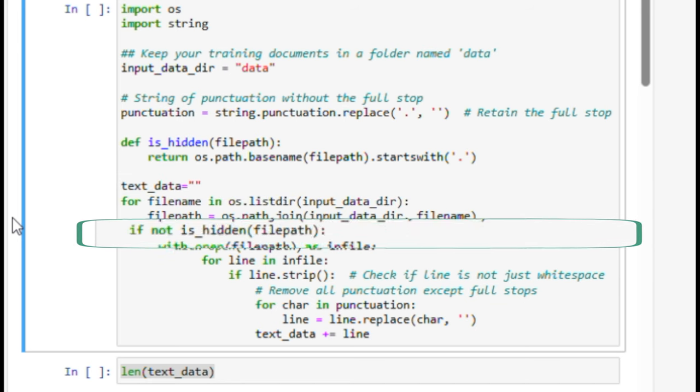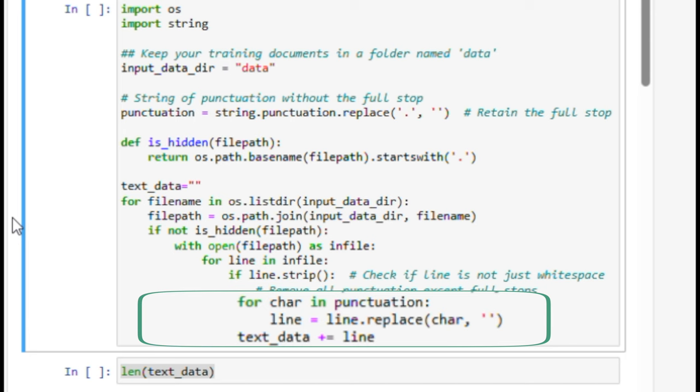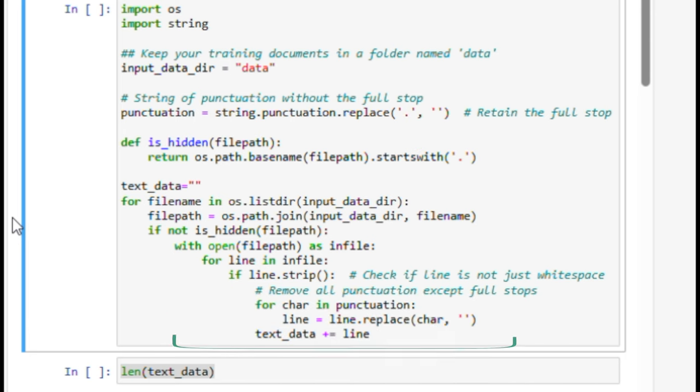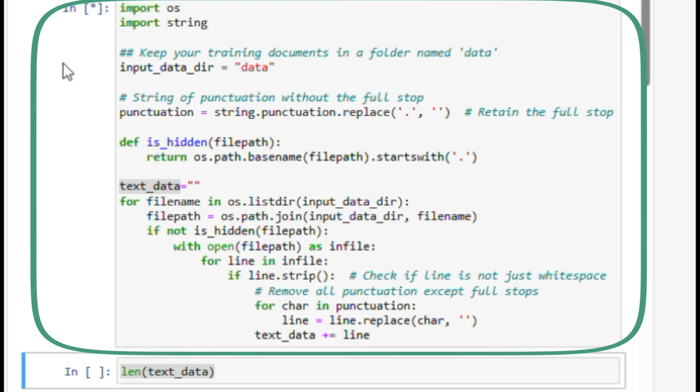Now, let's process the text. We read each file, remove all punctuation except full stops, and concatenate the lines into a single string variable named text_data. Depending on how many documents and text content you have in the data folder, this might take a few seconds.